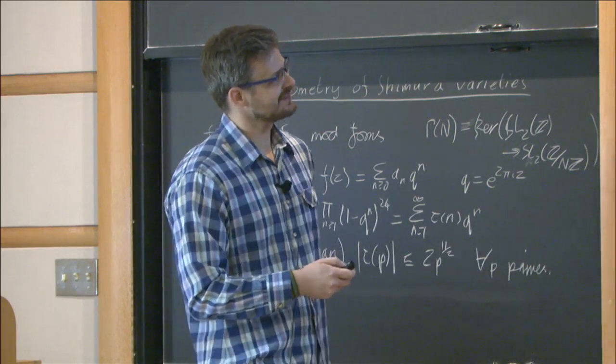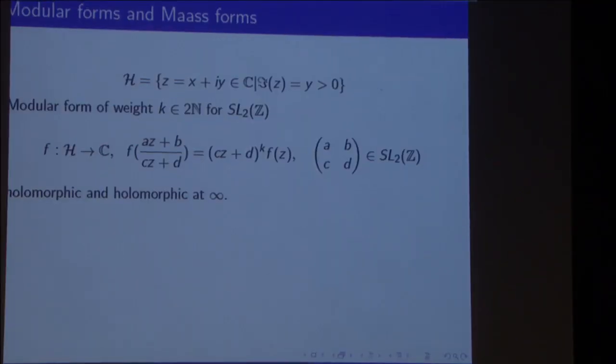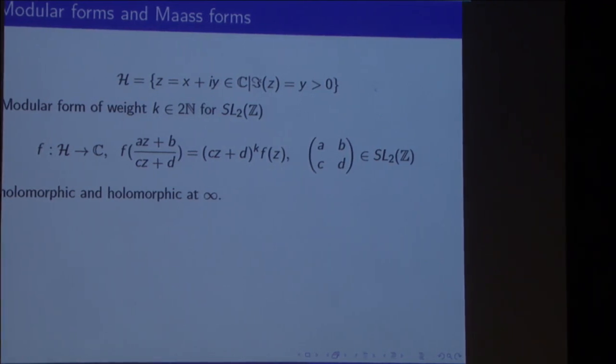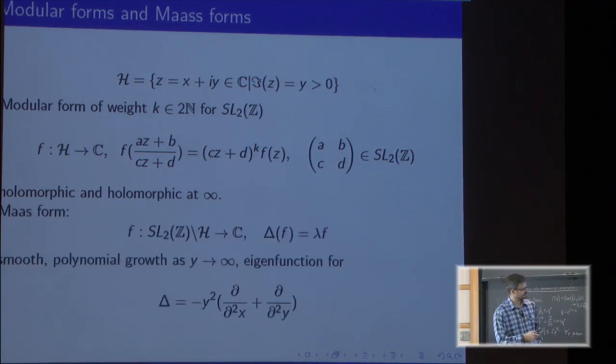We start once again with classical modular forms. These are functions on the upper half plane that satisfy a certain transition property under the action of SL2(Z) and are holomorphic. But we can also talk about Maass forms.